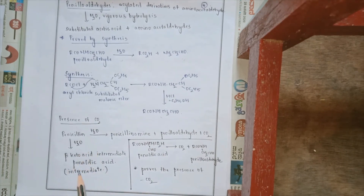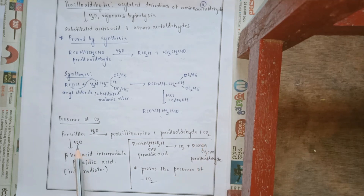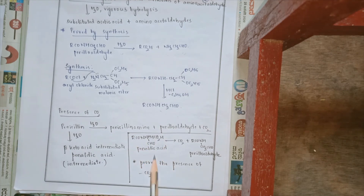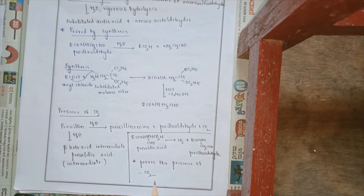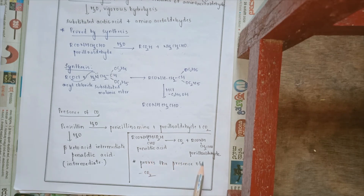The third product was carbon dioxide. Penicillin upon hydrolysis gave penicillin amine, peniloaldehyde, and carbon dioxide. The fact that penicillin gives carbon dioxide upon hydrolysis means penicillin also has a beta-keto acid intermediate, called penildic acid. The structure of penildic acid is R-CO-NH-CH(CHO)-CO2H. Penildic acid upon hydrolysis gives a molecule of carbon dioxide and peniloaldehyde, proving the origin of carbon dioxide from penicillin.